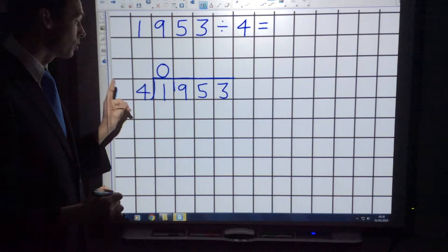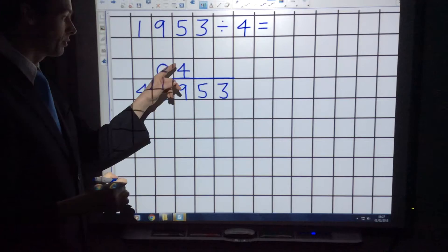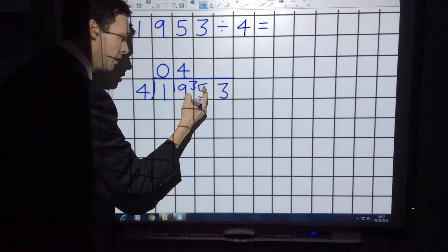Then we ask, how many times does four go into nineteen? The answer is four, because four times four is sixteen, and the remainder is three. Carry the remainder, and this number becomes thirty-five.